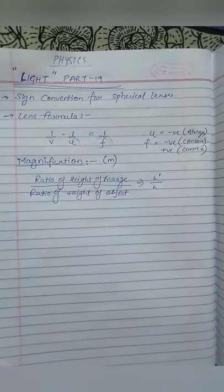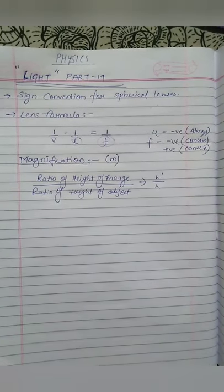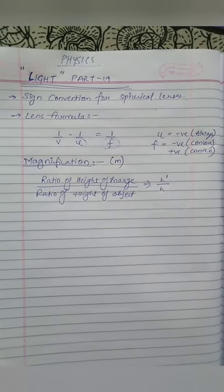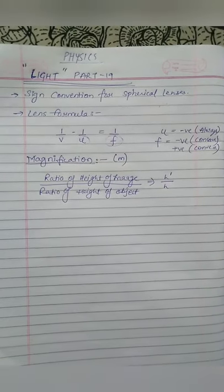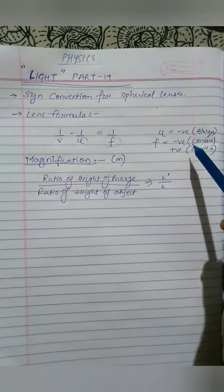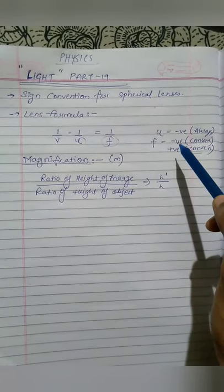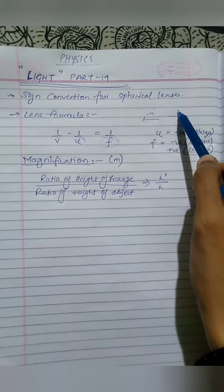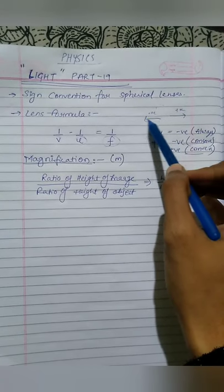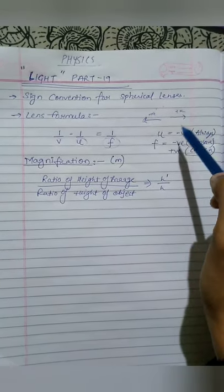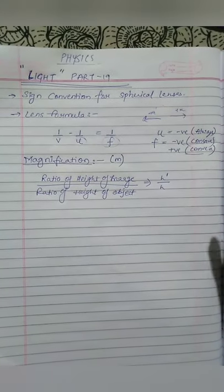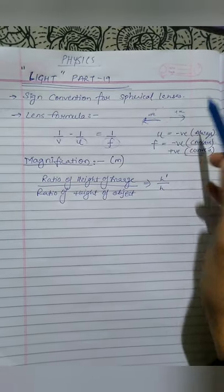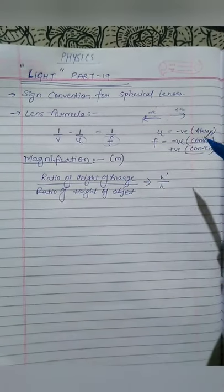In numerical problems, u (object distance) always stays negative in both mirror and lens. For f: in a concave lens it will be negative, and in a convex lens it will be positive — because if the focal length is on the left side it is negative, and if on the right side it is positive. Similarly, v depends on where the image is formed: left side is negative, right side is positive.